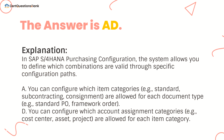In SAP S/4HANA Purchasing Configuration, the system allows you to define which combinations are valid through specific configuration paths. A. You can configure which item categories — e.g., standard, subcontracting, consignment — are allowed for each document type, e.g., standard PO, framework order. D. You can configure which account assignment categories — e.g., cost center, asset, project — are allowed for each item category.